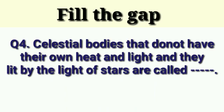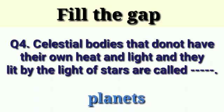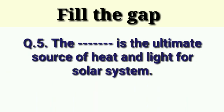Next question: celestial bodies that do not have their own heat and light, and are lit by the light of stars, are called dash. Answer is: planets. Next question: the dash is the ultimate source of heat and light for the solar system.